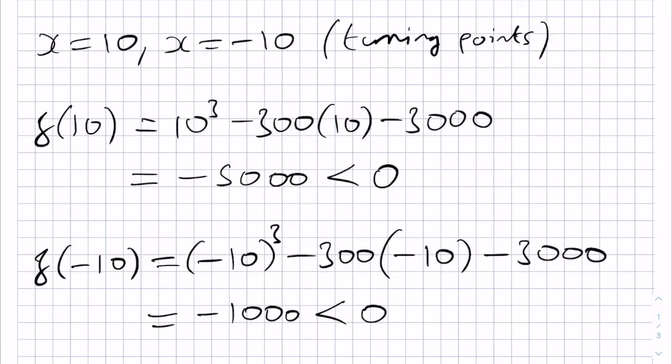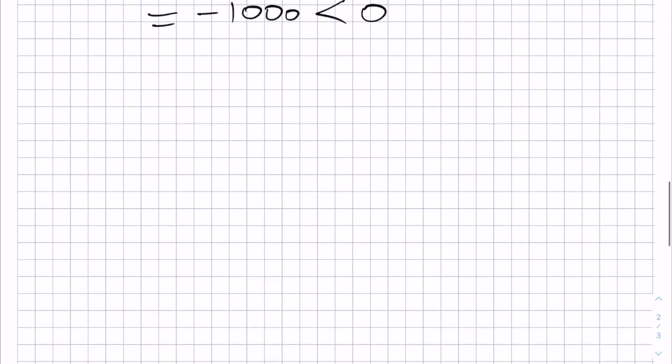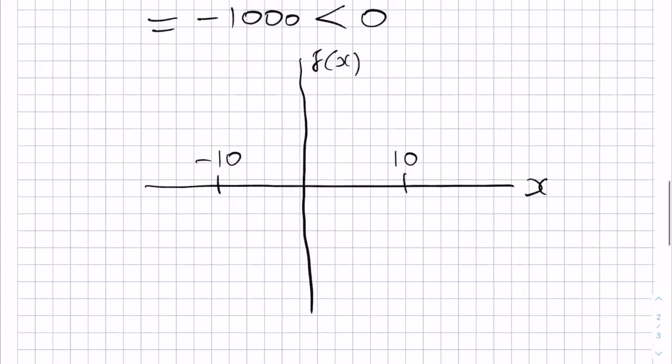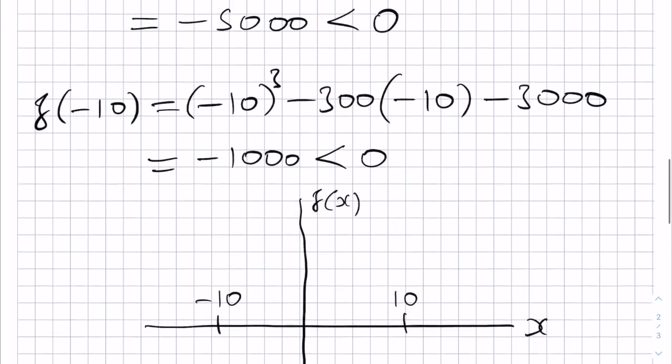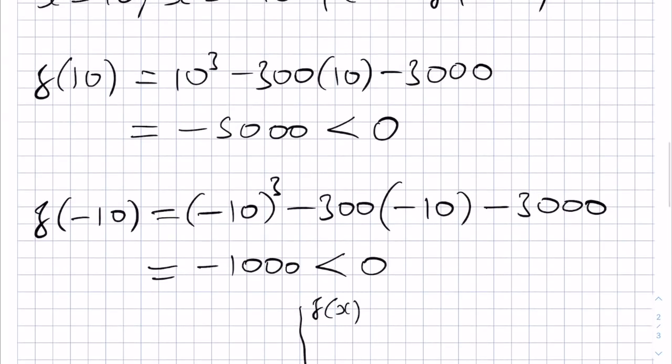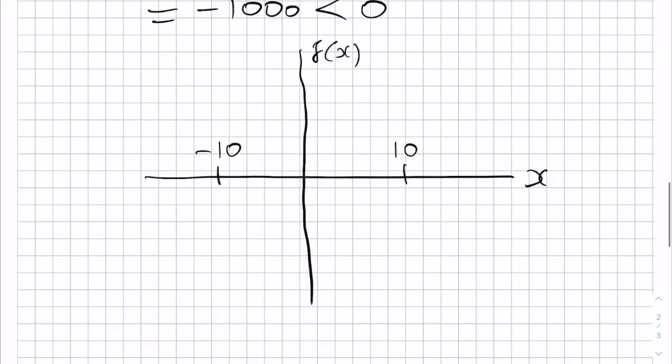Now that we have this information, we can start to draw what this function f(x) looks like. So if we first draw our axes, we have our x and our f(x). We know that our turning points are at -10 and 10 in the x values, and we know that it happens at -1000 for -10 and -5000 for 10, and so it will look something like this.